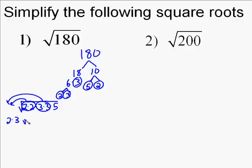Then we eliminate the pair of 3s and write a single 3 out front. So we end up with 2 times 3 out front, which equals 6. And so our answer is 6 square root of 5.